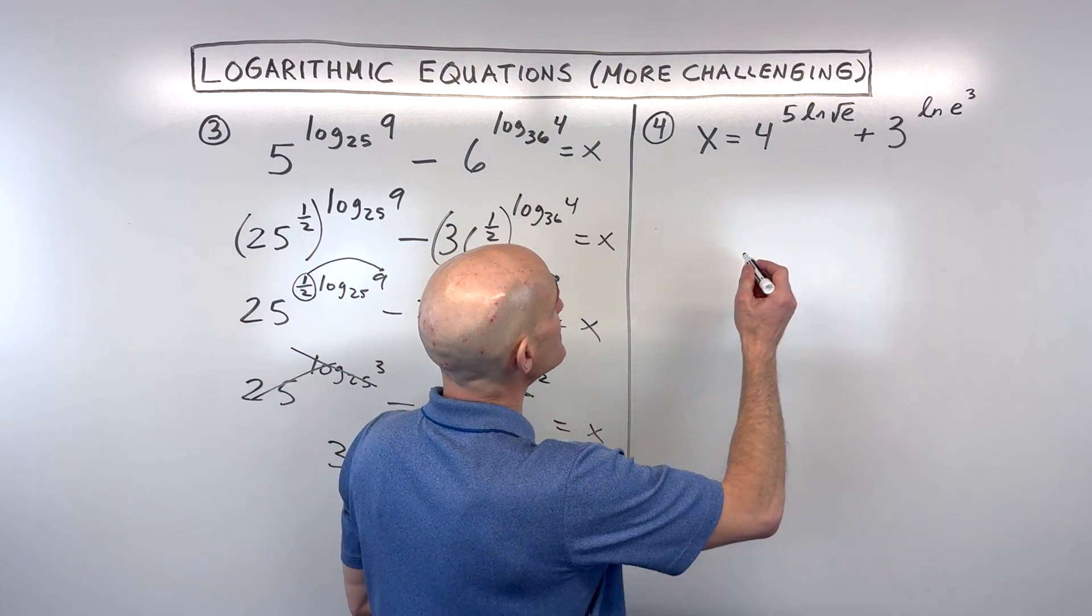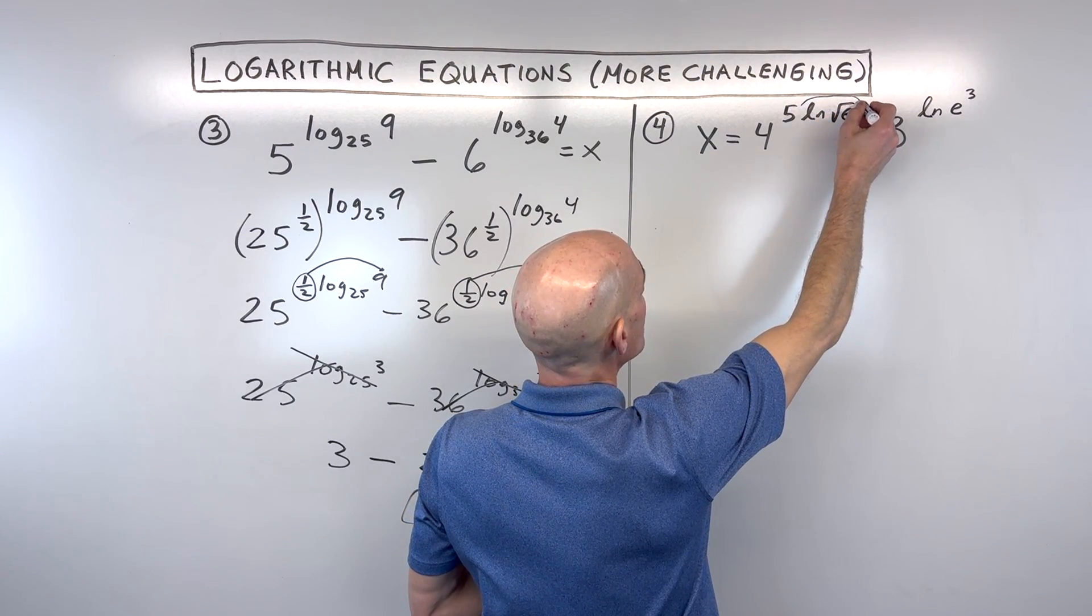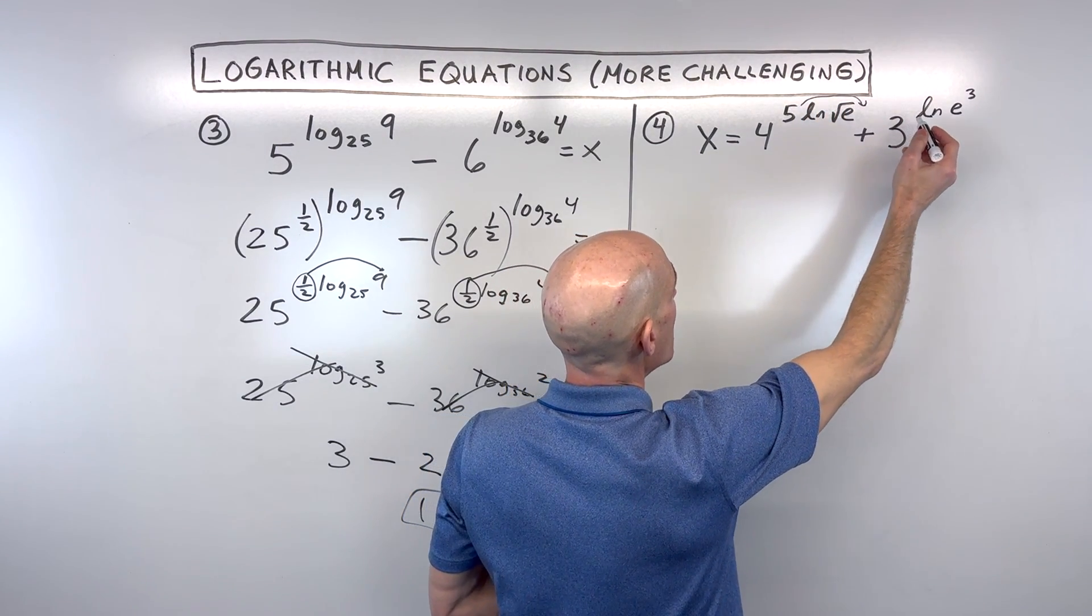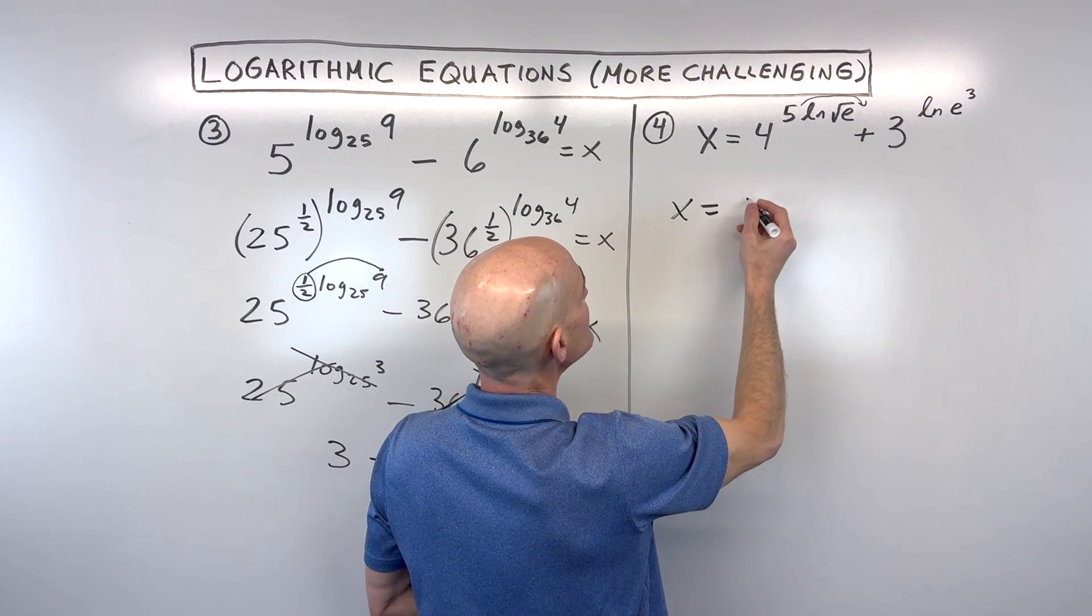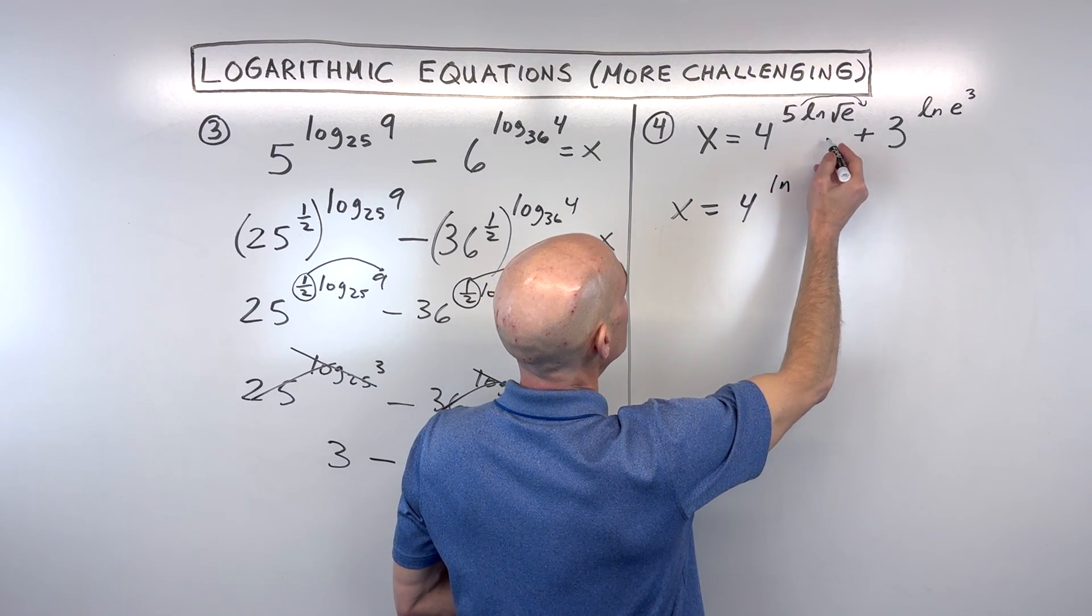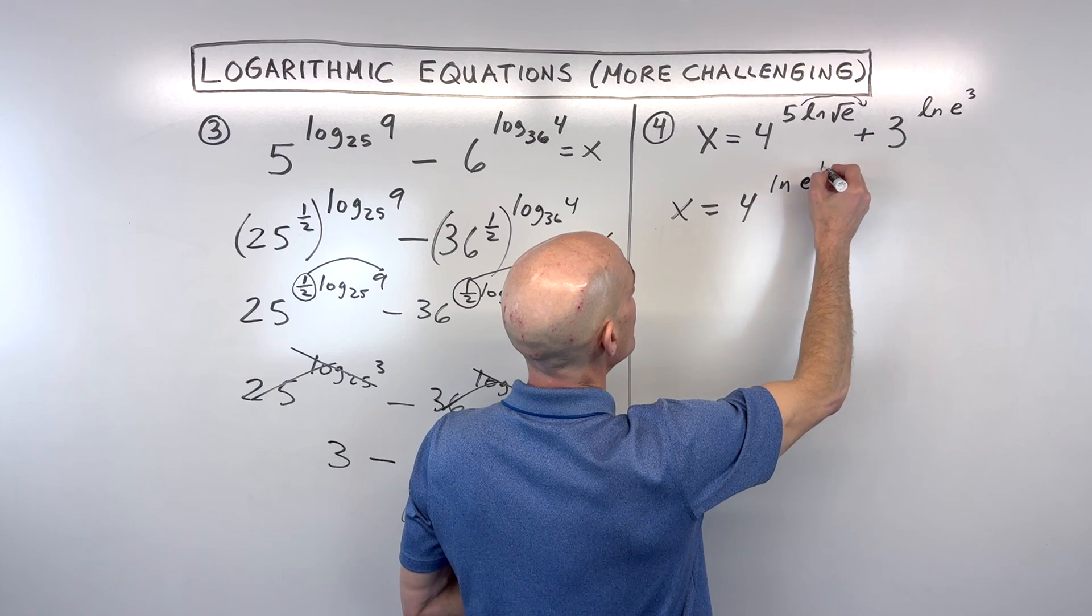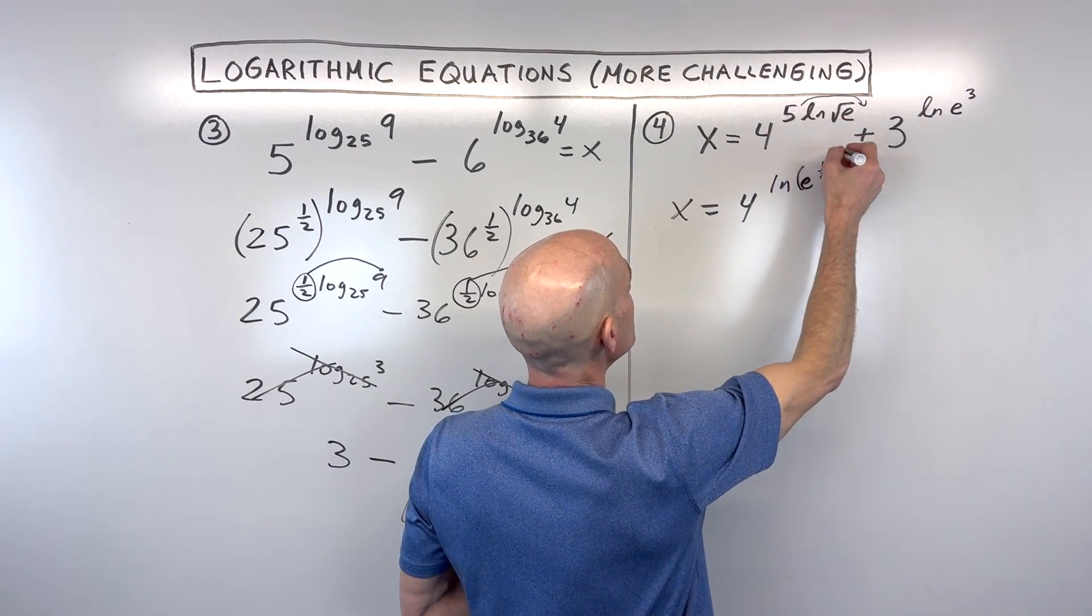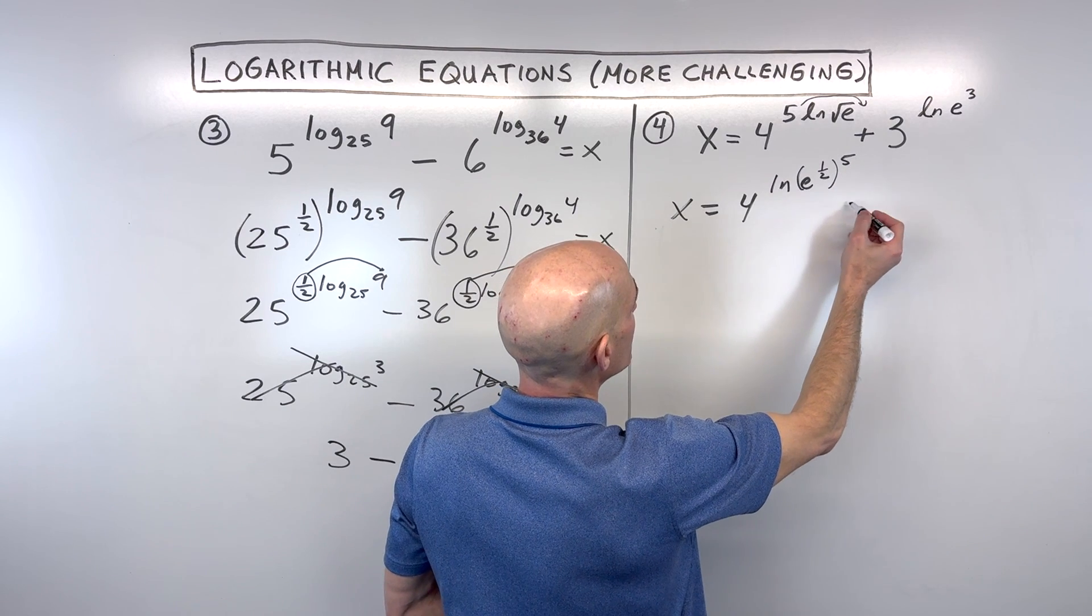And so what I would do is I would take this coefficient, bring it up as a power. That's the power property of logs or natural logs. And so if we do that, this looks like x equals 4 to the natural log of, now, the square root of e is the 1 half. So 1 half. But then we're bringing up this power like that. So now we've got power to power we're going to multiply.